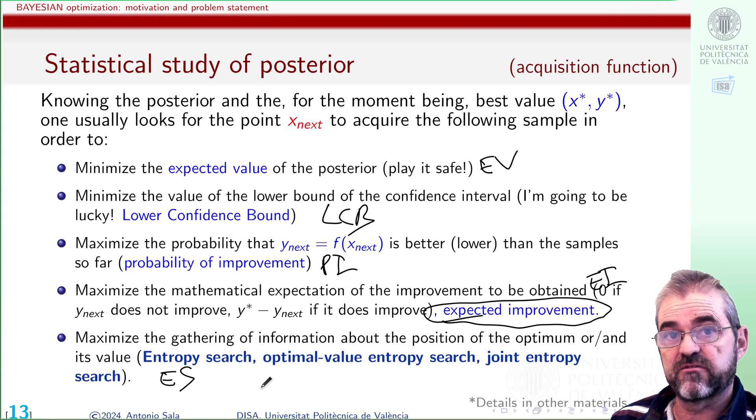Discussing the differences and advantages and drawbacks and computational complexity of all these things is the core theoretical issue in Bayesian optimization, but of course, it requires much more than a 20-minute video. So let's summarize and conclude this video.